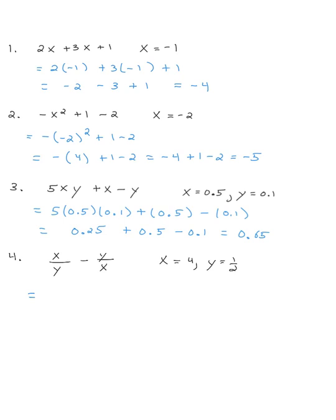In question 4, again two variables. I have 4 divided by one-half, minus one-half divided by 4. If I divide 4 by one-half, that's multiplying by 2, which gives me 8. And if I take a half and divide it by 4, I'm really just multiplying the two denominators together, which gives me one-eighth. Now 8 is really 7 and eight-eighths. Eight-eighths is 1, so take one-eighth from eight-eighths, that leaves 7 eighths. So 7 and seven-eighths is the answer — you could use an improper fraction or a decimal.